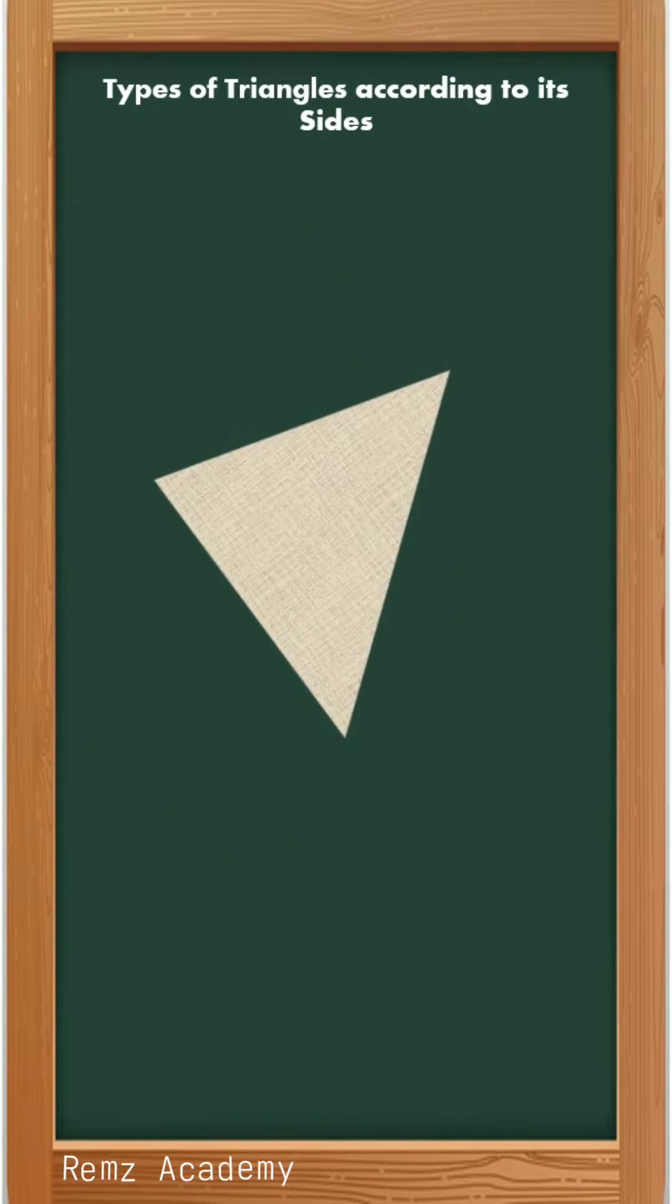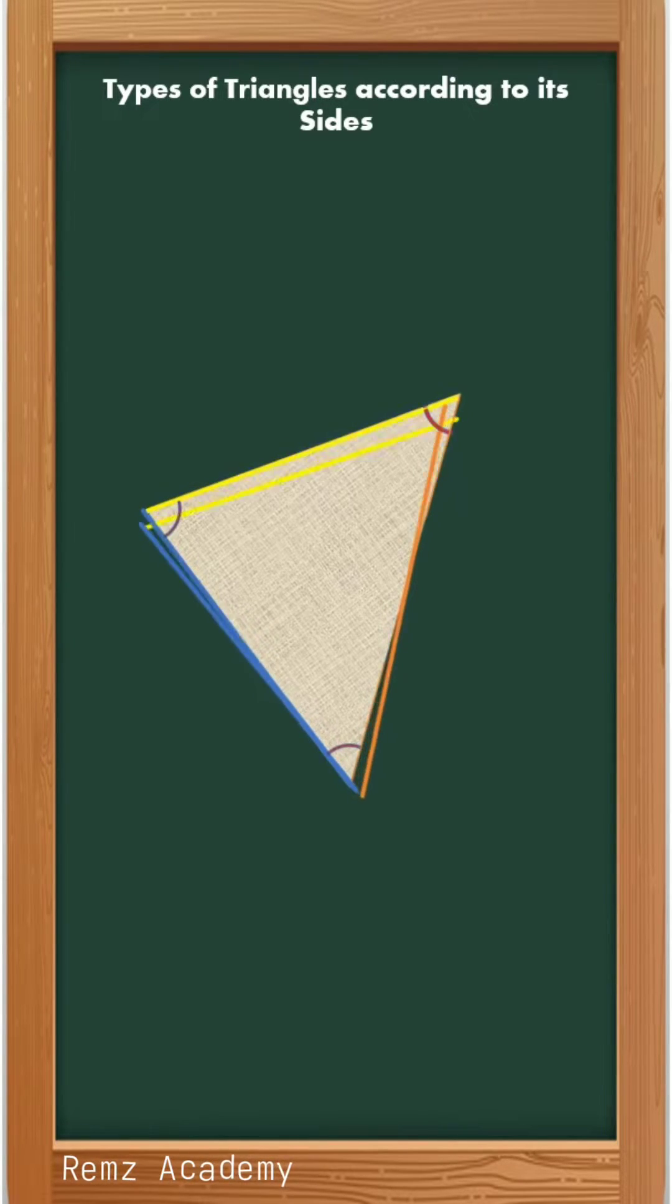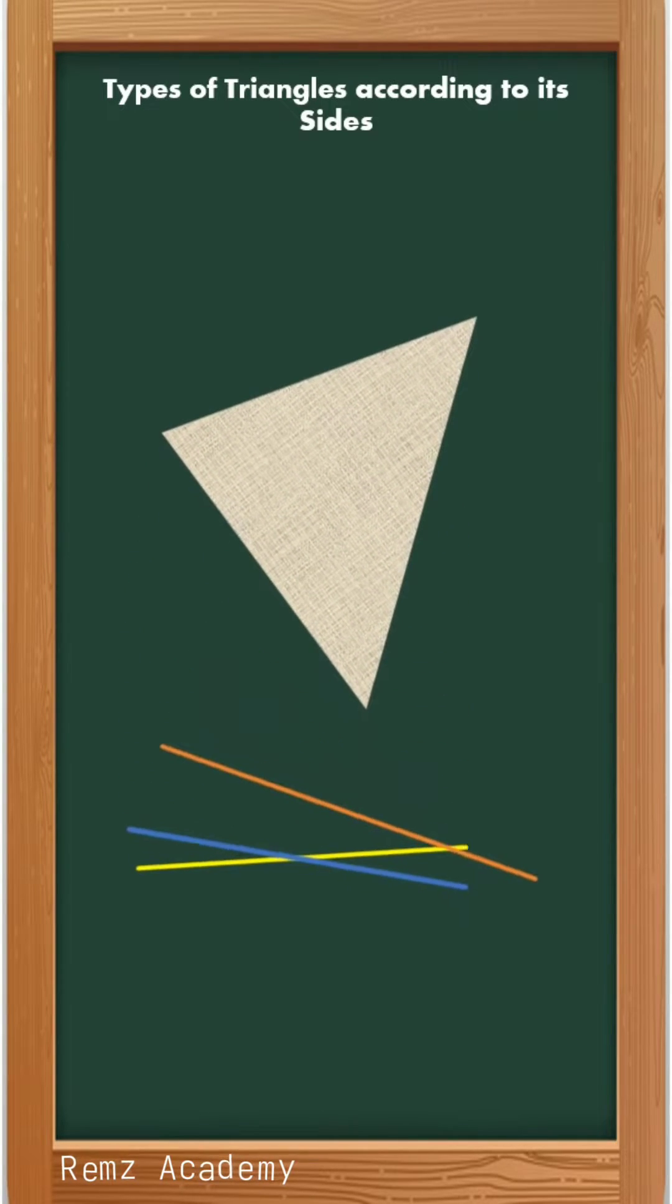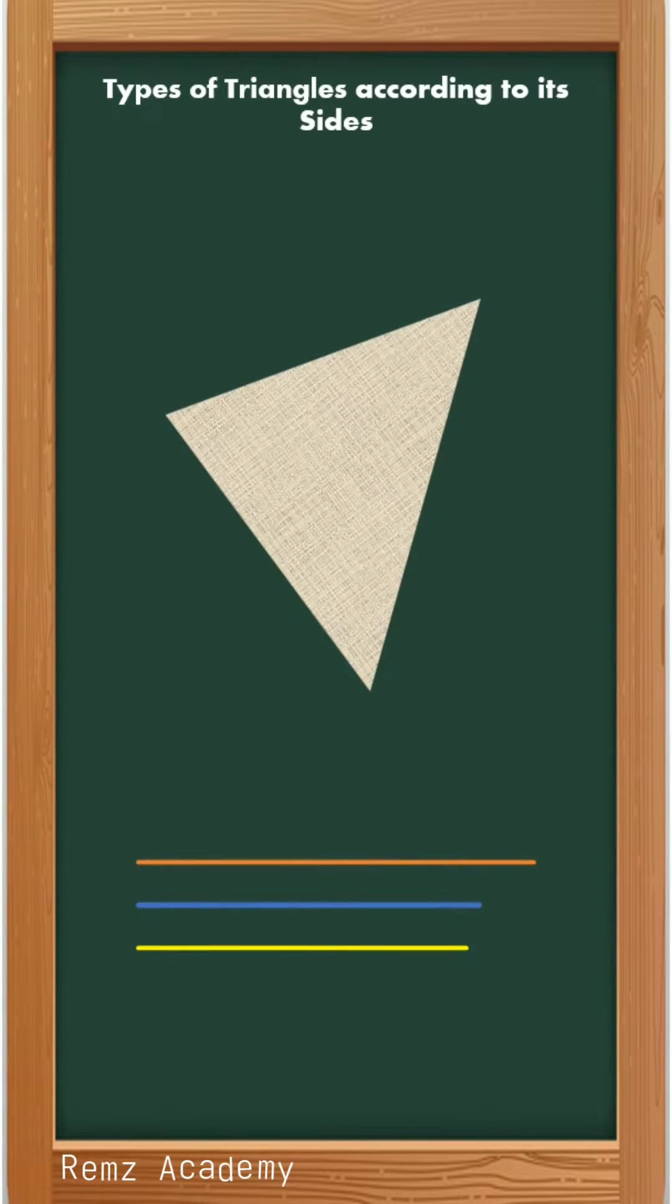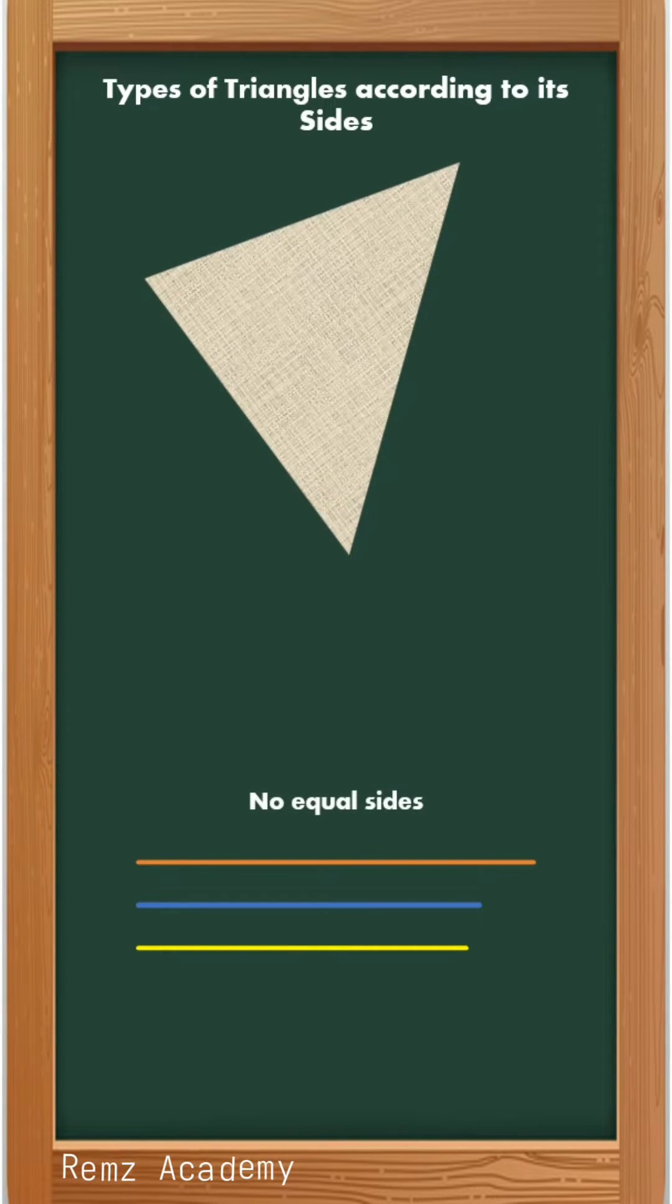Let us start with this first triangle. What have you observed? Let us try to compare the sides of this triangle. As you can see, the sides are not equal. The sides have different lengths. So, if the lengths of its sides are not equal, then that is called scalene triangle.